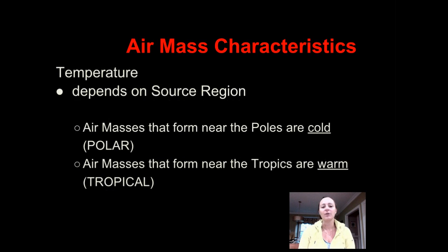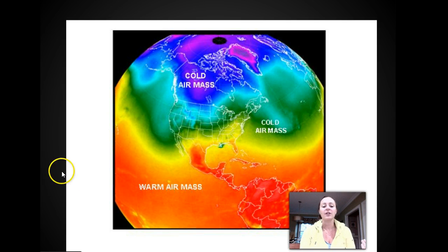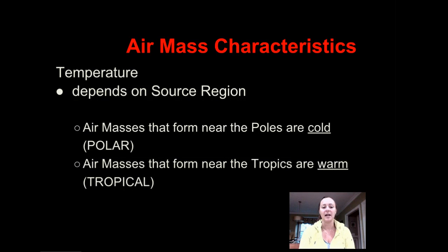The second feature we're going to talk about is temperature, which again depends on the source region. If an air mass forms closer to the poles it'll be colder — we call those polar air masses. If it forms along the equator it's going to be warm, so we call that tropical. Air masses near the poles are cold; air masses near the equator or the tropics are warm and called tropical.